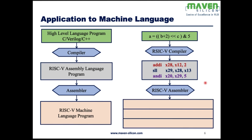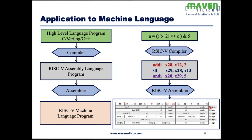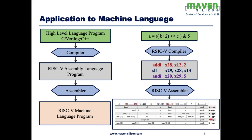To convert this into machine language, it follows the RISC-V ISA. The RISC-V ISA defines the format of the instruction. There could be different formats like R, I, S, B, U, and J types. Here, if you look, ADDI falls under I-type instruction — immediate type. SLL, shift left logical, falls under R-type instruction. Again, ANDI falls under I-type. So based on the format, it converts the instruction into binary.